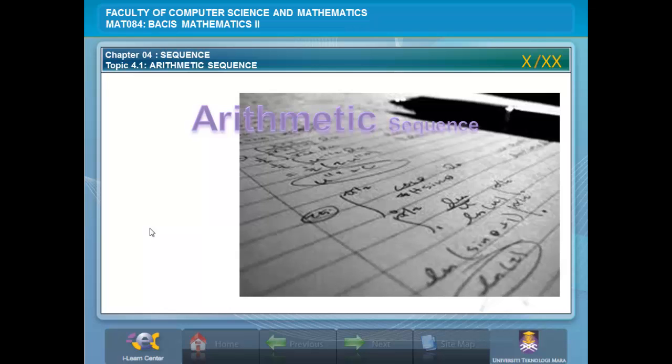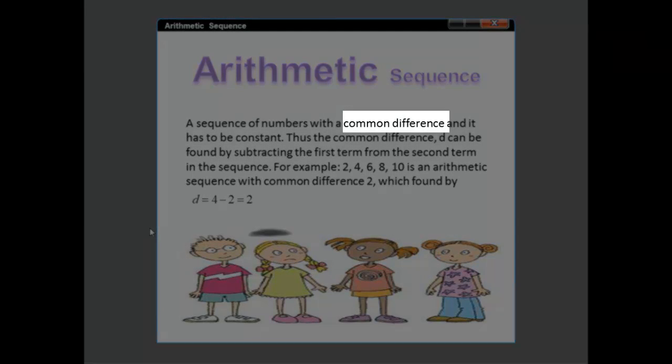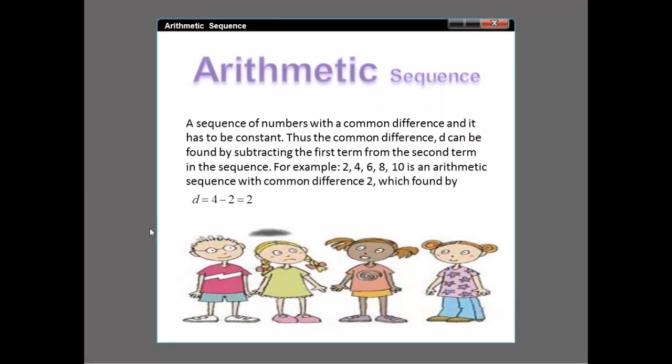What is arithmetic sequence? An arithmetic sequence is a sequence of numbers with a common difference, and it has to be constant. Thus, the common difference d can be found by subtracting the first term from the second term in the sequence. For example, 2, 4, 6, 8, 10 is an arithmetic sequence with common difference 2, which is found by d = 4 - 2 = 2.